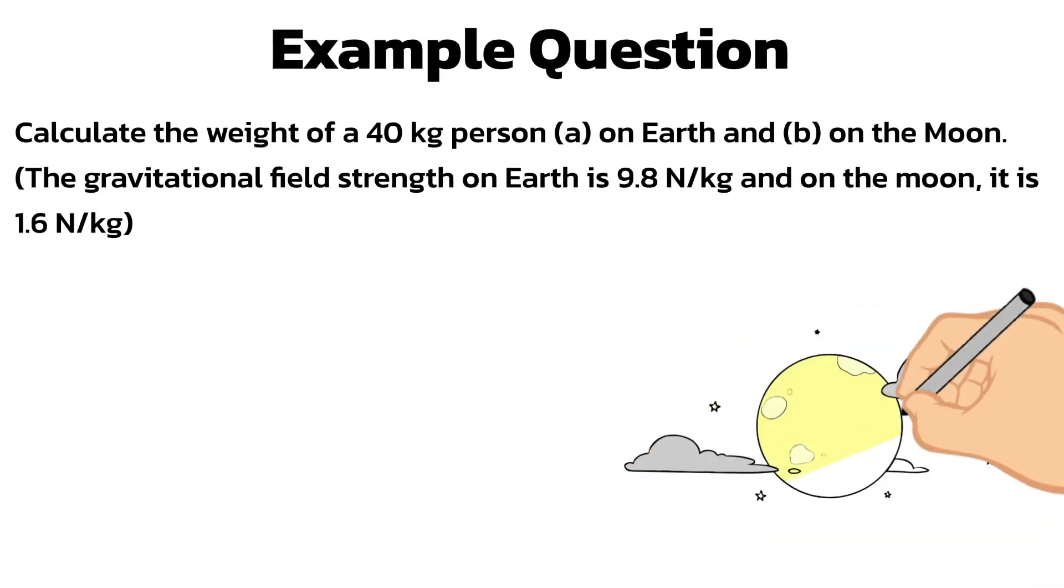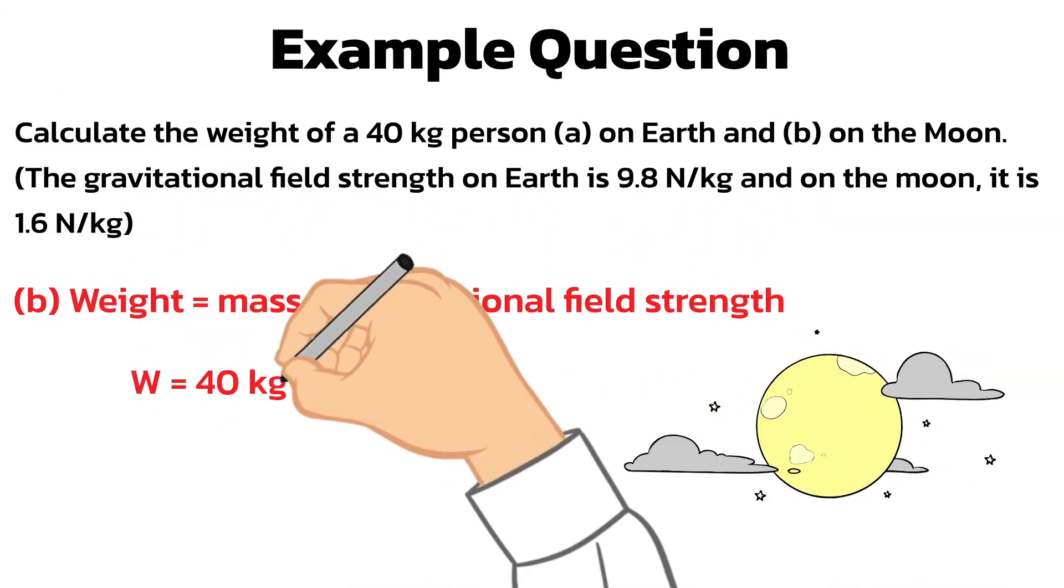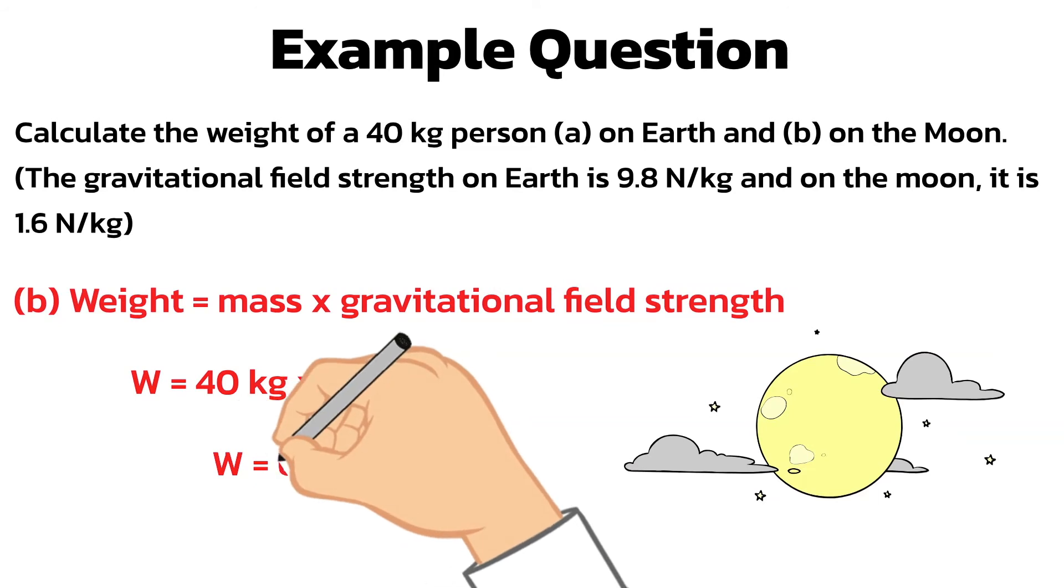For part B, go through the same process but this time gravitational field strength is 1.6 newtons per kilogram. This gives the person's weight on the Moon is 64 newtons.